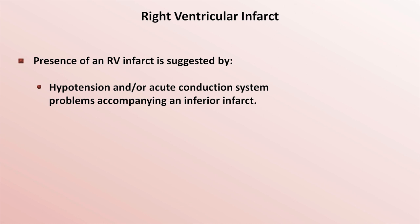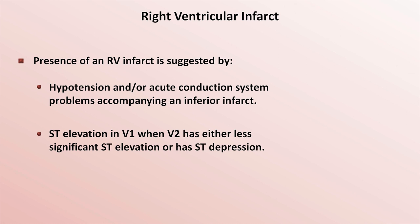The conduction system problem is more of an association, since the RCA's contribution to the conduction system usually takes off from the main vessel very proximally, which increases the probability that an RCA obstruction is also proximal to the takeoff of the RV artery. Another suggestive feature of an RV infarct concurrent with an inferior infarct is the additional presence of ST elevation in lead V1 which exceeds any ST elevation that may or may not be present in V2.